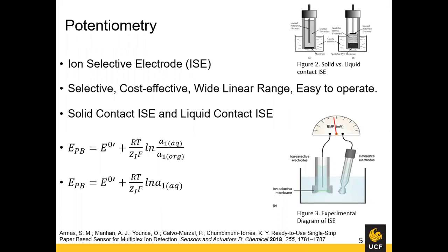Potentiometry is a type of electrochemical technique that measures a potential difference in response to a chemical event registered by an electrode. Based on the physical state of the substrate forming the electrode, ion-selective electrodes, or ISEs, can be classified as either solid contact or liquid contact. For liquid contact, it's usually a tube filled with the analyte of interest, and the electron transport mechanism is present at the membrane-analyte solution interface. For solid contact, ion-selective membranes are deposited directly onto solid electrode surfaces with no internal electrolyte solution.